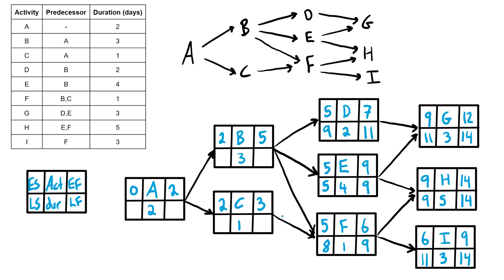Activity C has only one successor, so we bring that number straight across and subtract the duration to get a late start of seven. Activity B has three successors with three competing values: nine, five, and eight — we take the smallest, which is five. Five minus three gives a late start of two for B. For activity A, there are two successors; we take the smallest of two or seven — we bring two — and two minus two equals zero.